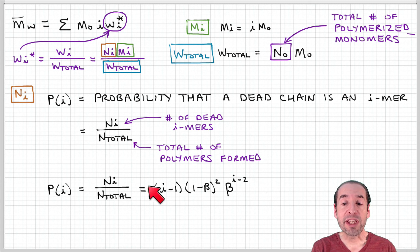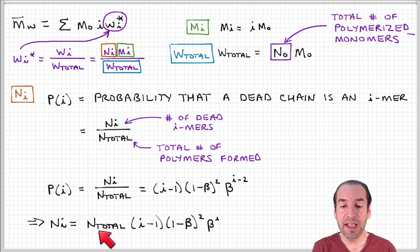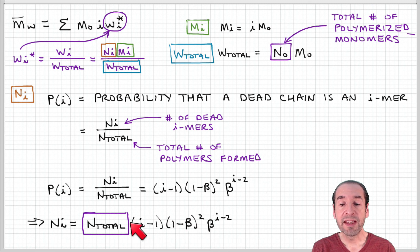We derived an expression for this probability of a chain being an I-mer in terms of this parameter beta. If we set these two representations of this probability equal, we can solve for NI in terms of the total number of dead chains times these other terms. Now we need to find an expression for the total number of dead chains in our system.